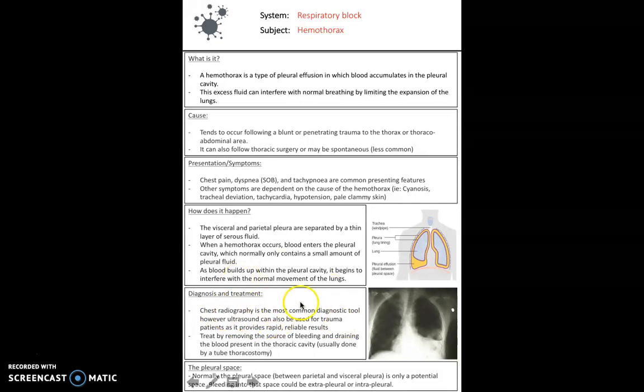It's usually diagnosed with a chest x-ray because you can quite clearly see that there's a hemothorax there. And usually the treatment is by removing the source of bleeding, so draining the blood present in the thoracic cavity. And this is usually done via a thoracostomy.